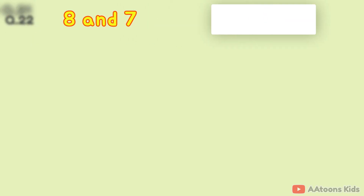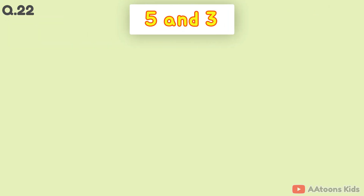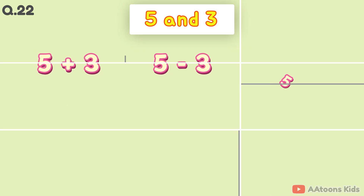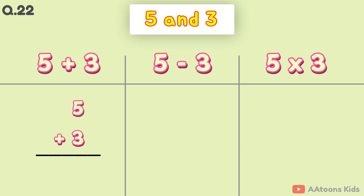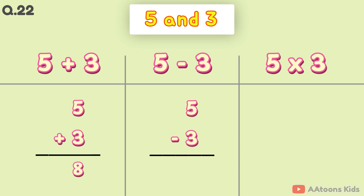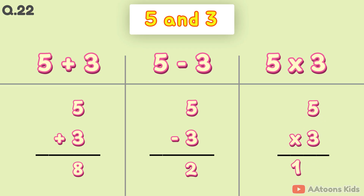The two numbers are 5 and 3. 5 plus 3 is 8. 5 minus 3 is 2. 5 times 3 is 15.